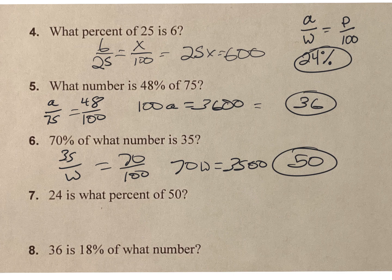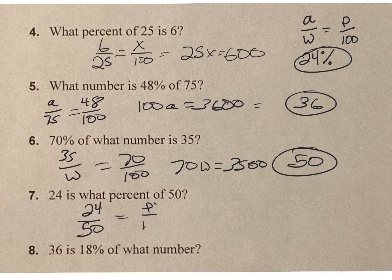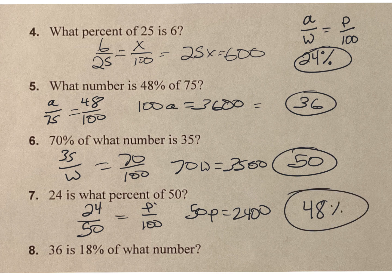24 is what percent of 50? The percent is what I'm missing, so it's going to be 50p equals 2,400. When I divide each side by 50, my percent is 48%.